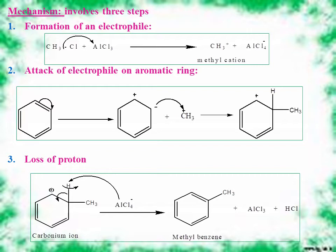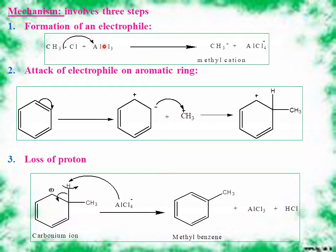The mechanism is a type of electrophilic aromatic substitution reaction involving three steps: first, formation of the electrophile; second, electrophilic attack on the aromatic ring; and third, loss of proton. In step one, the alkyl halide — methyl chloride — reacts with aluminium trichloride. Due to the higher electronegativity of chlorine, Cl⁻ is released and attacks aluminium, converting AlCl₃ into AlCl₄⁻ with the formation of a methyl cation (CH₃⁺).